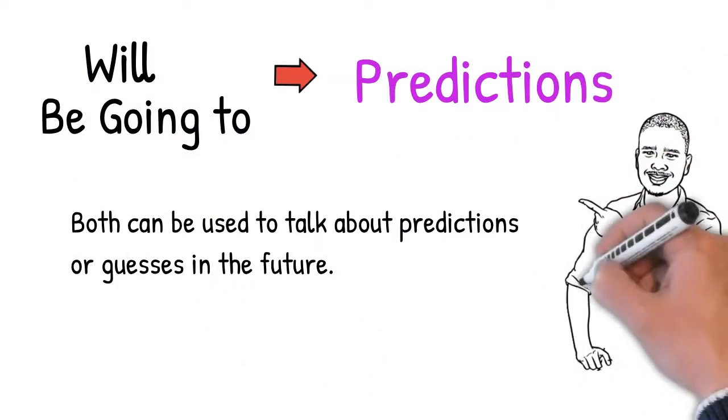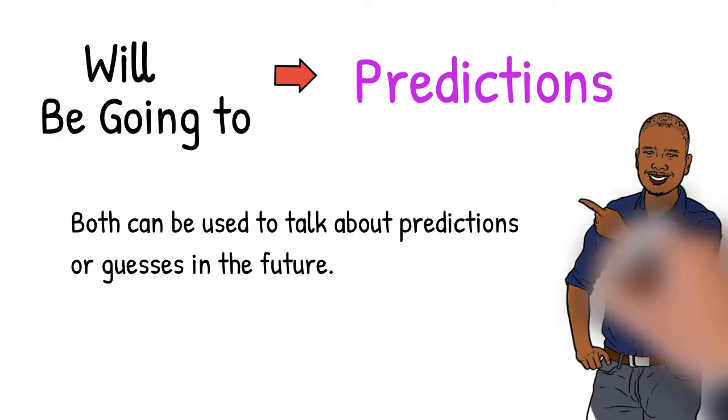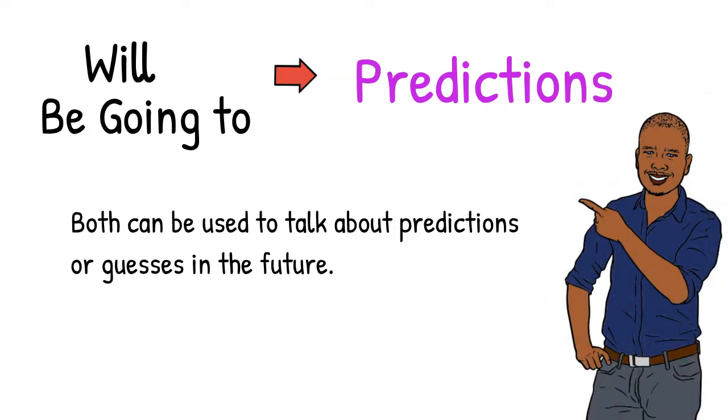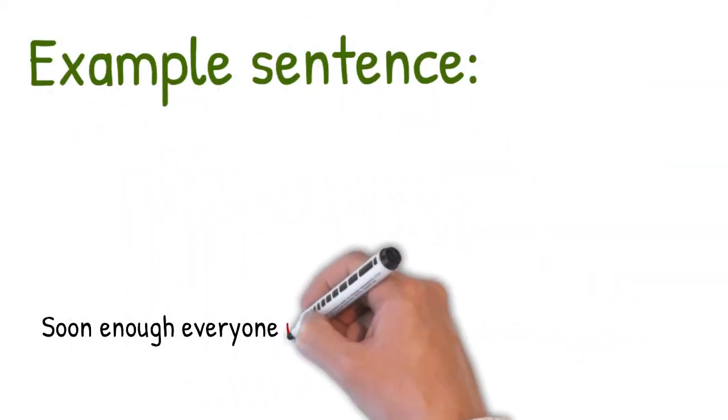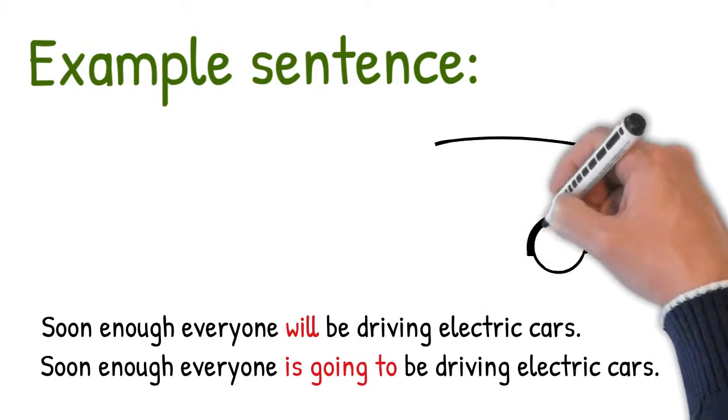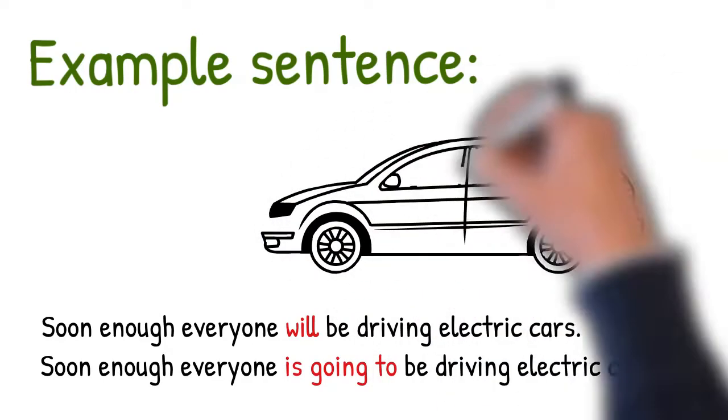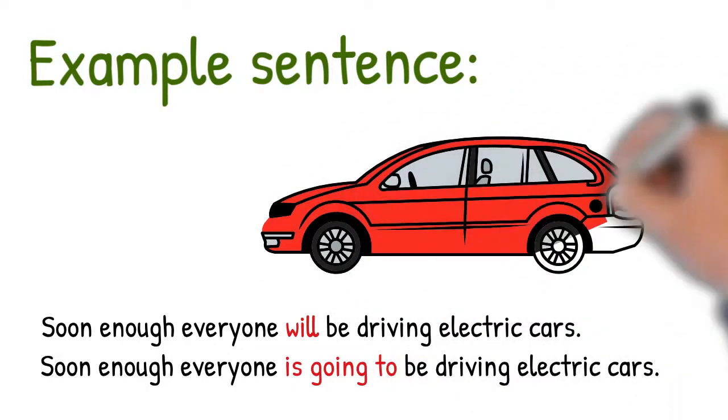Will and be going to are identical when it comes to predictions. Both can be used to talk about predictions or guesses in the future. Here's another example sentence. Soon enough, everyone will be driving electric cars. Soon enough, everyone is going to be driving electric cars. This is a prediction in the future, in the distant future, and they both have the same meaning.